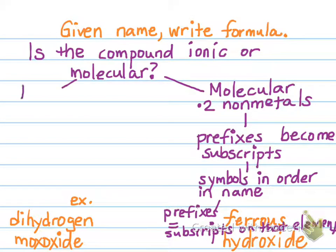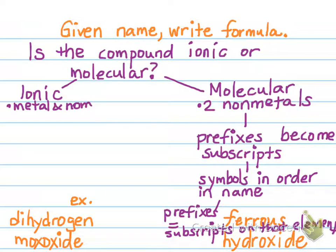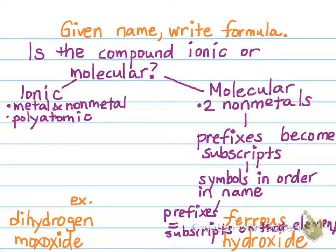What if it's an ionic compound? We're going to know it's ionic because it contains a metal and a non-metal, or it has a polyatomic ion in it. Remember you have ten polyatomic ions memorized, and most of the others are going to end in -ate or -ite. So we know our compound is ionic.